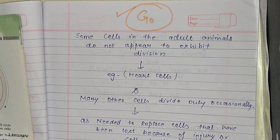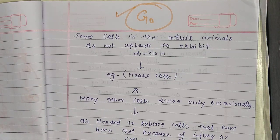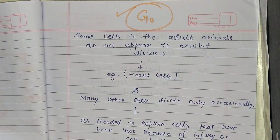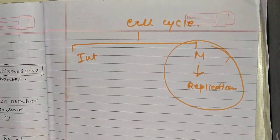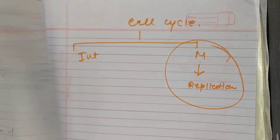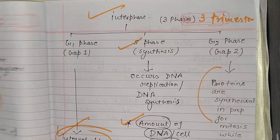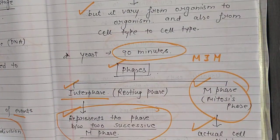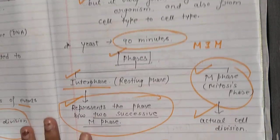Many people are confused about what is G-not phase because when we studied the phases of cell cycles, we didn't talk about this phase. So let's do a quick revision of what I told you in the last video. If you haven't watched it, the link is in the description box, or click the i button to find the video.